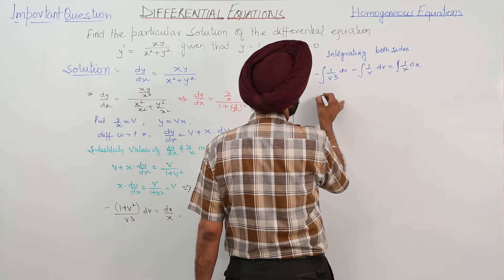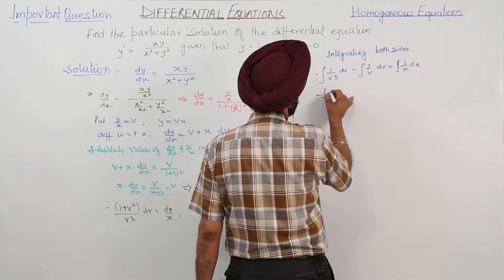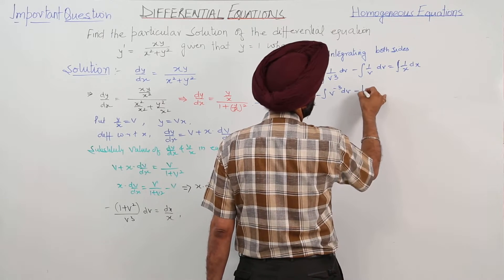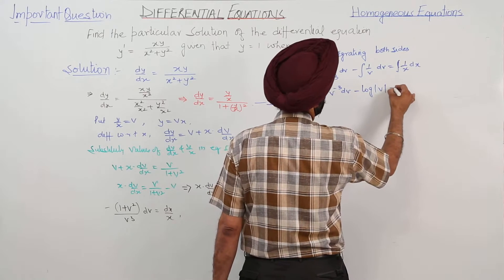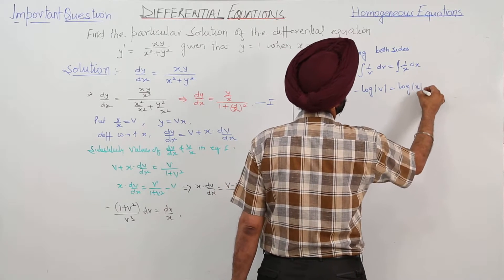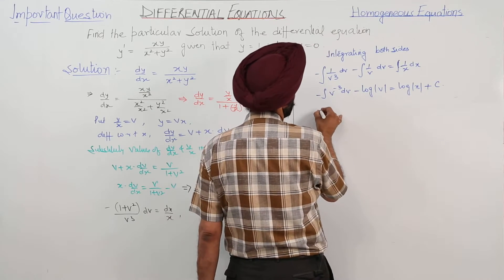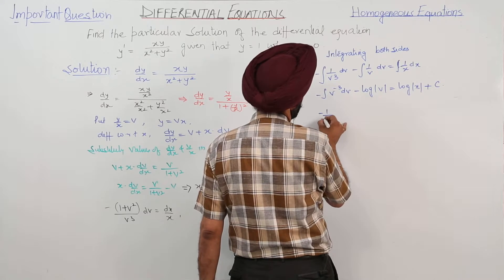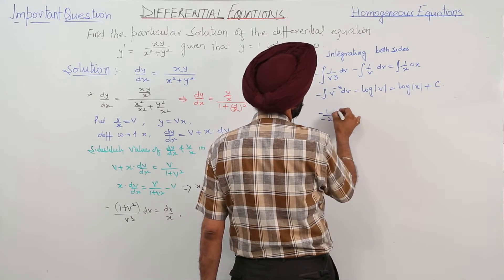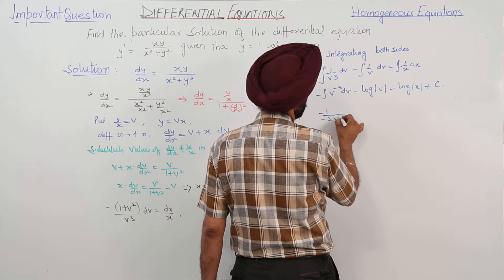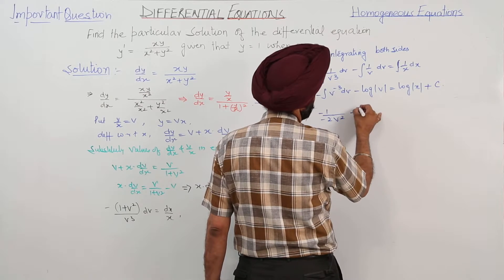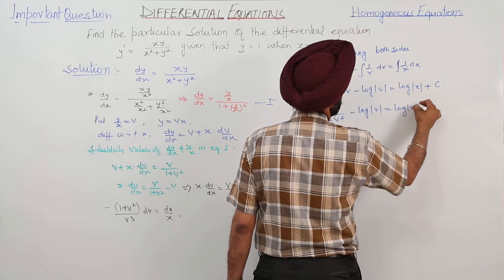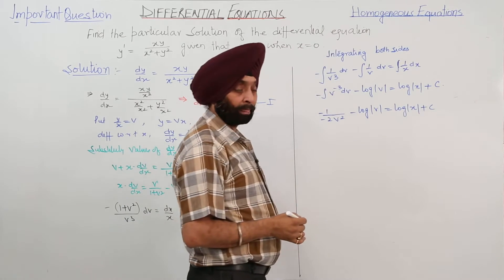This becomes: negative integral of v⁻³ dv minus log|v| = log|x| + C. Working it out: −(1/(−2))·(1/v²) − log|v| = log|x| + C, which gives 1/(2v²) − log|v| = log|x| + C.